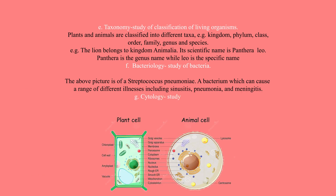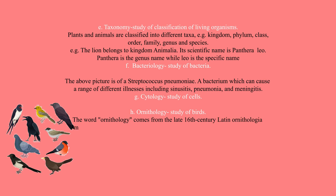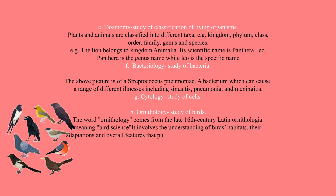G. Cytology — the study of cells. H. Ornithology — the study of birds. The word ornithology comes from the late 16th century Latin ornithologia, meaning bird science. It involves the understanding of birds' habitats, their adaptations and overall features that put them under kingdom Animalia, class Aves.